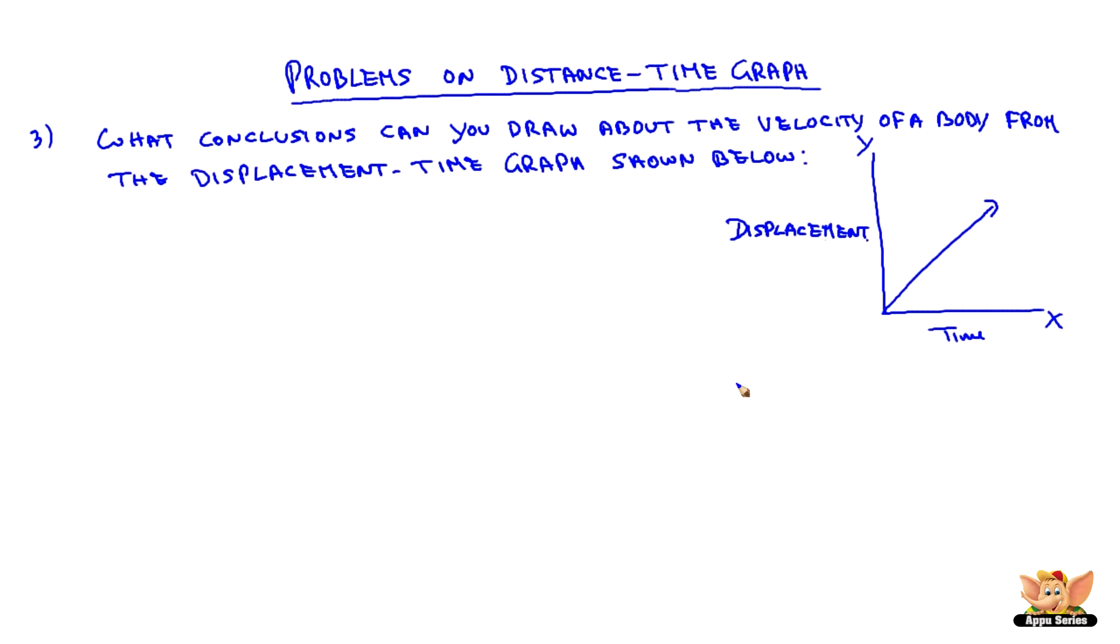So we say that since it's a displacement, this is a velocity graph. So the body is moving with uniform velocity. As it's a straight-line graph, for uniform velocity, the graph of displacement time is straight-line. And if displacement is distance, then it becomes uniform speed.